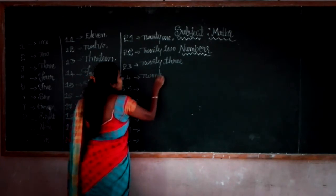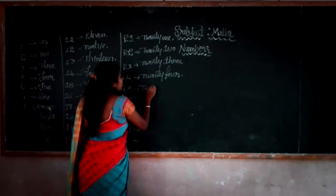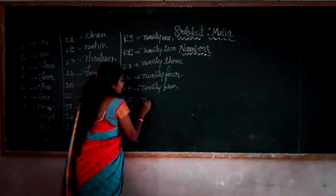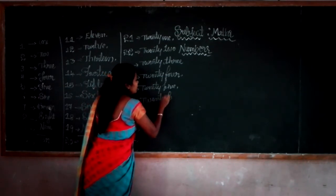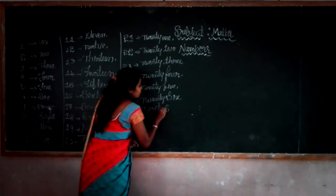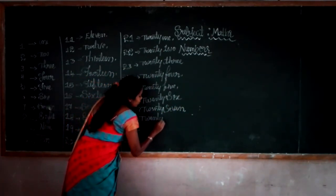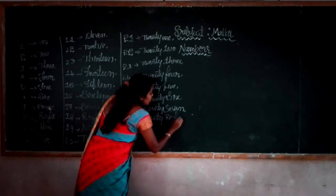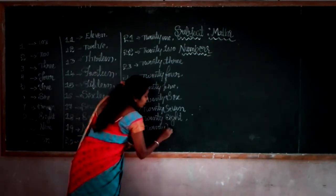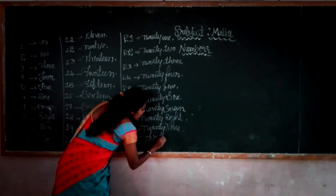TWENTY THREE-23, TWENTY FOUR-24, TWENTY FIVE-25, TWENTY SIX-26, TWENTY SEVEN-27, TWENTY EIGHT-28, TWENTY NINE-29. The spelling of 30 is THIRTY.